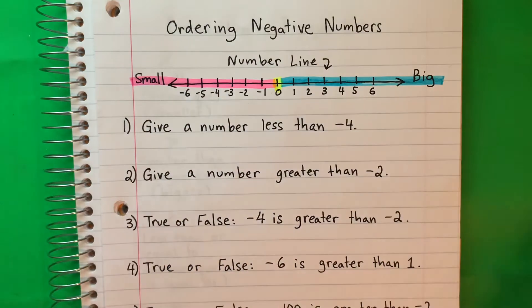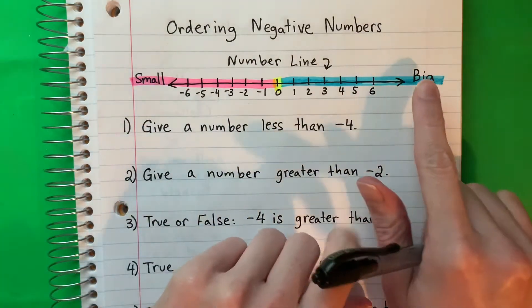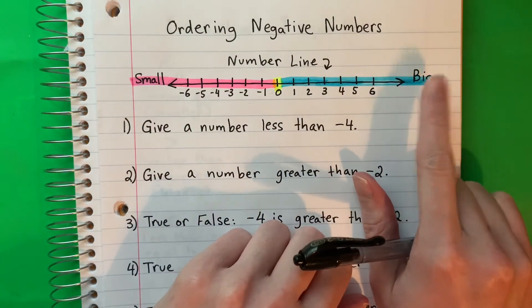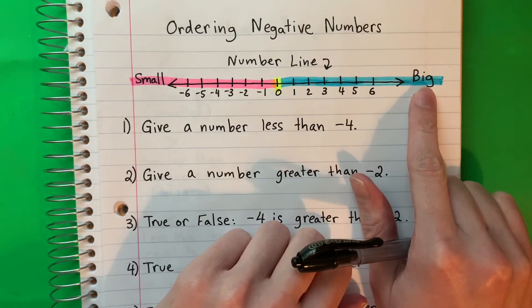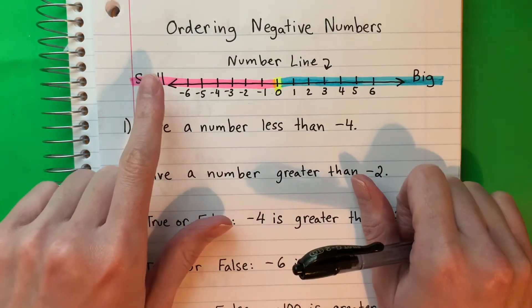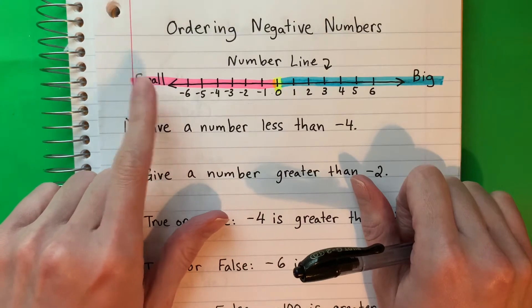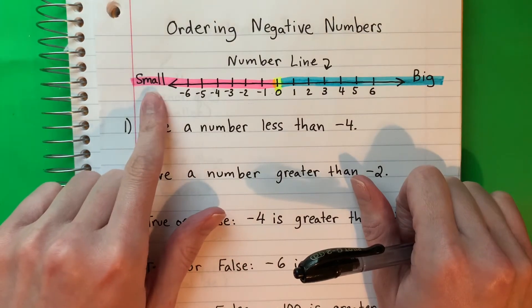So remember: right is big — derecha es grande — and left is small — izquierda es pequeño.